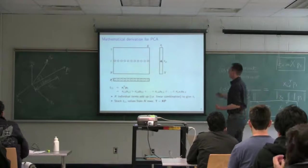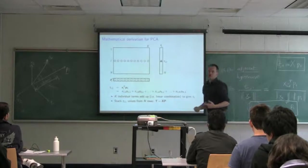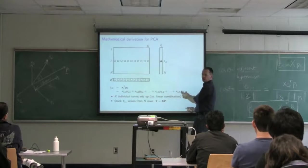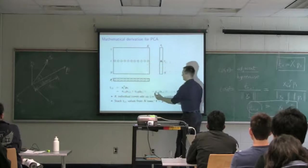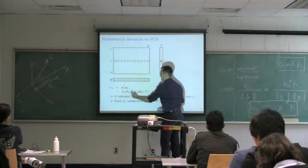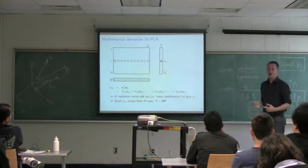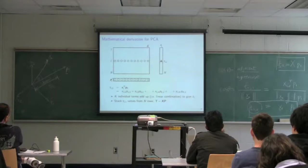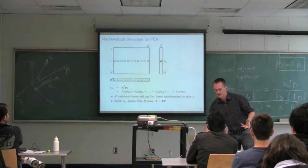We calculate our score as a linear combination of the x's, given by the weights in p. The coefficients p are fixed — once I calculate the first component, those p values are constants. My x values change as I go to each new row, but p stays the same. So the score t is nothing more than a weighted sum of the values within a row of X. I'll use that terminology of linear combinations and weighted sums all the time from now on.